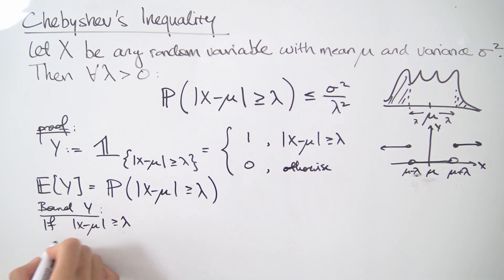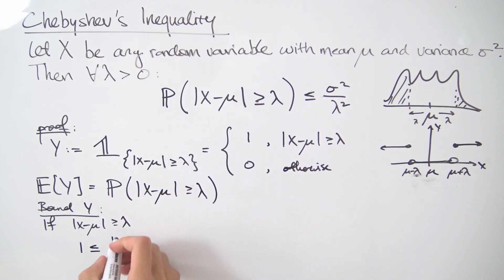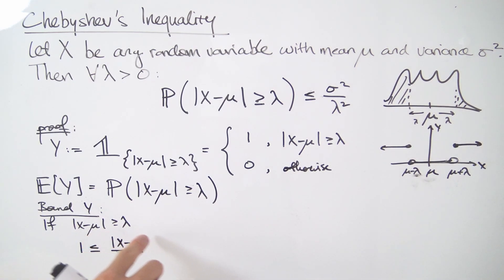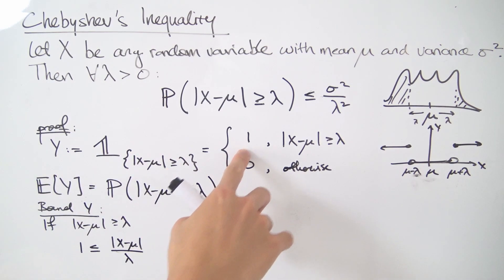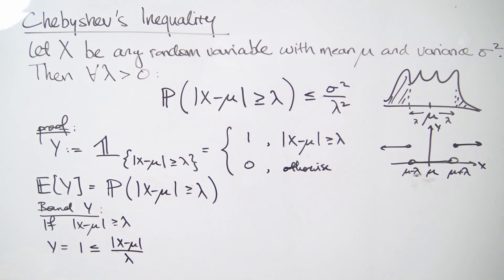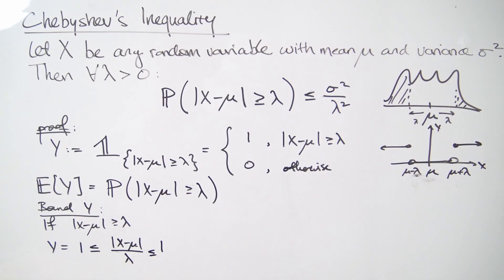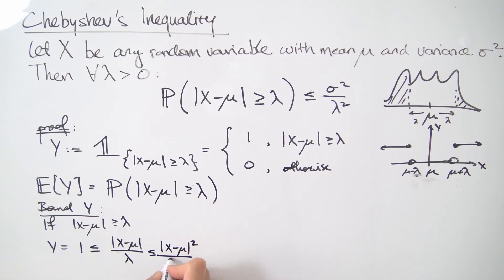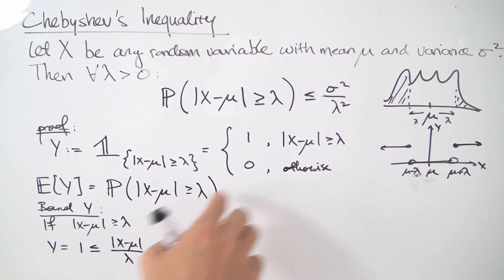So we get 1 is less than or equal to the absolute value of X minus mu divided by lambda. And when this condition holds, that's exactly when Y equals 1. So Y is bounded above by this quantity. Now, I want to go one step further and square this term, which gives another upper bound. Because this quantity is greater than or equal to 1, squaring it makes it bigger. So Y is also bounded above by (X minus mu) squared over lambda squared when this case applies.